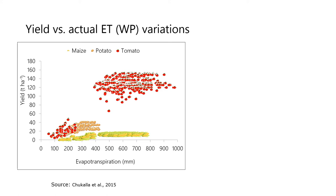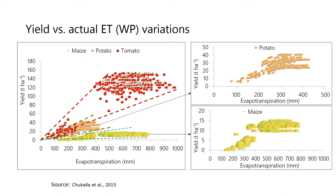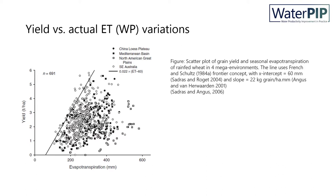The figure on the left shows the water productivity — that is the slope of yield versus evapotranspiration — being highest for tomato, followed by potato and maize. The yield versus actual evapotranspiration, which is a measure of biophysical water productivity, varies even for the same crop.